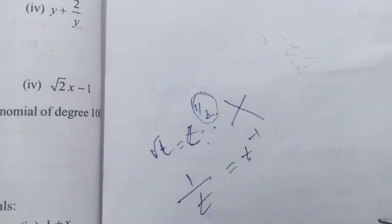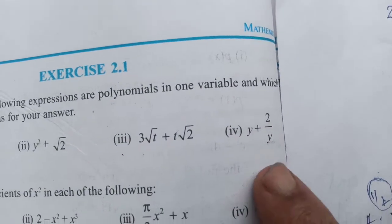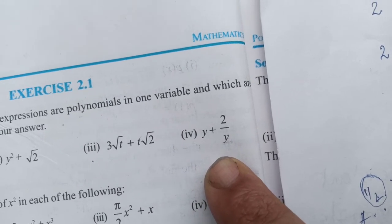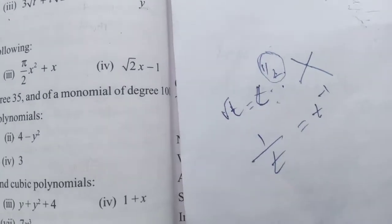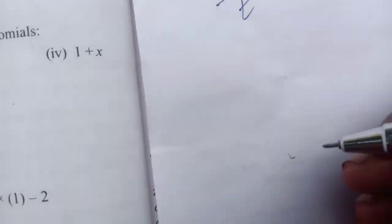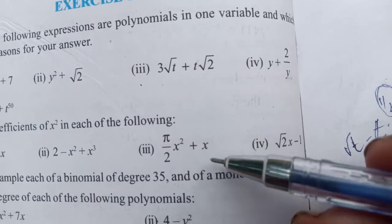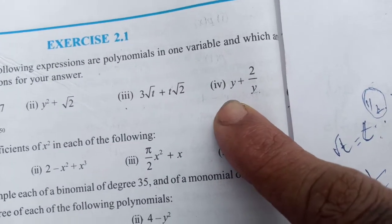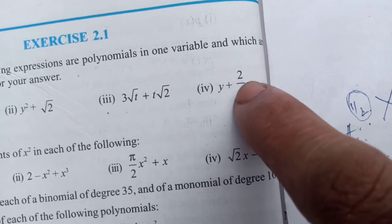The next one is y + 2/y. In this case, y/y + 2/y, then in this case it is 2/y. We cannot take this also as a polynomial.